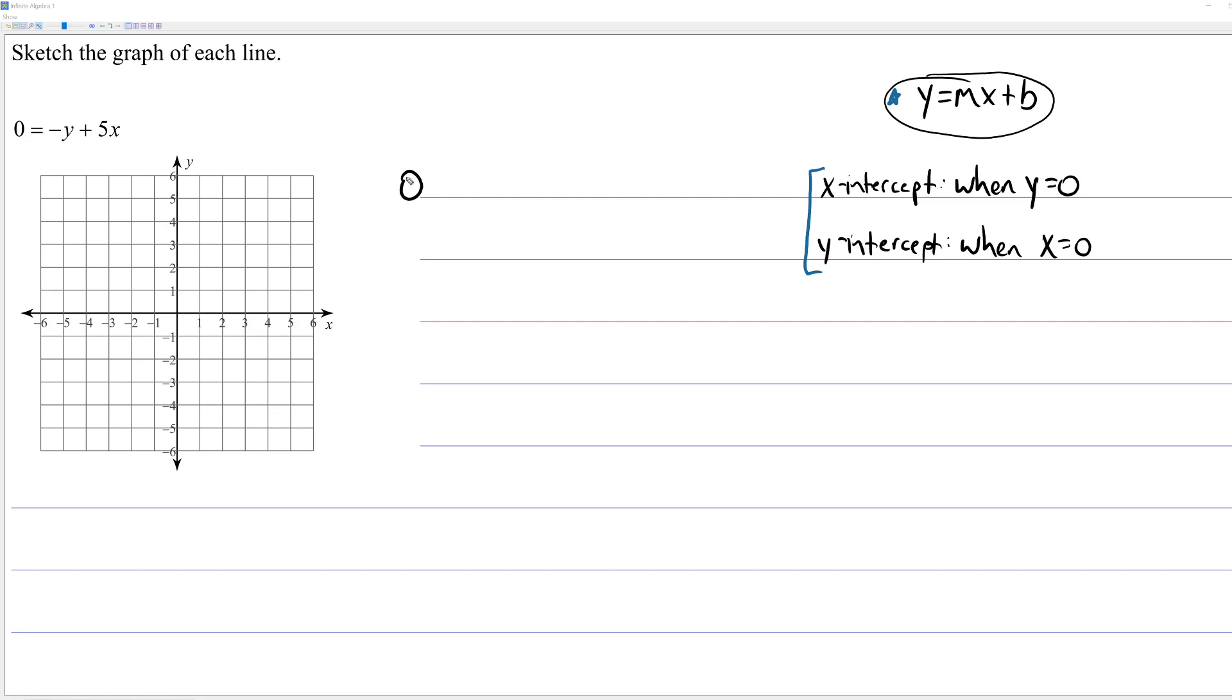So, we have 0 is negative y plus 5x. I want to make it look like y equals mx plus b, so I need y by itself. Luckily, I can do this in one step. If we simply add y to both sides, we'll move y from the right-hand side to the left-hand side and we have y equals 5x.